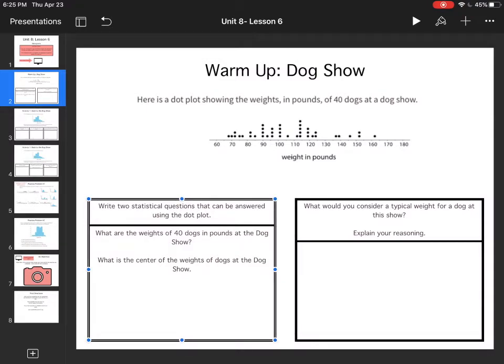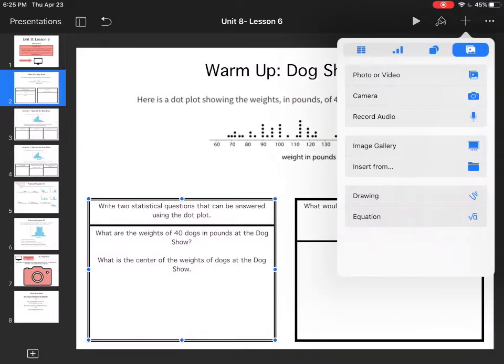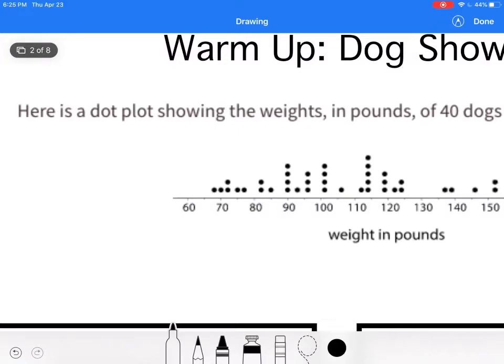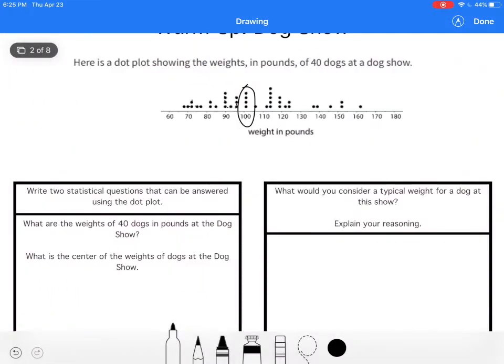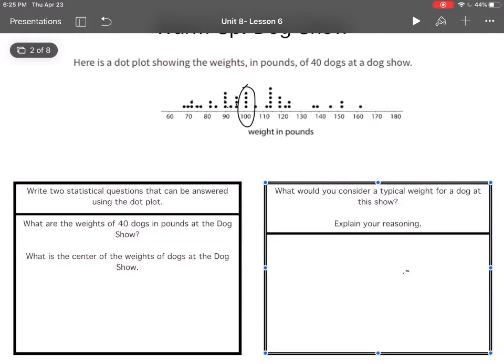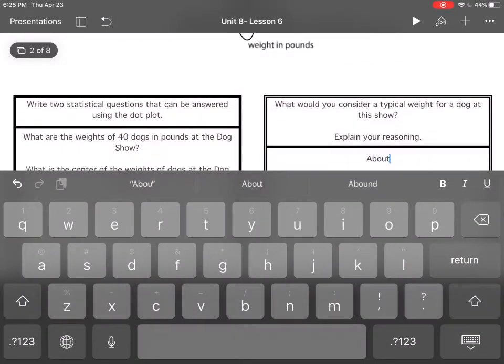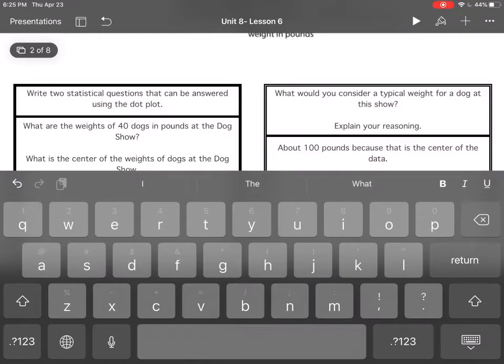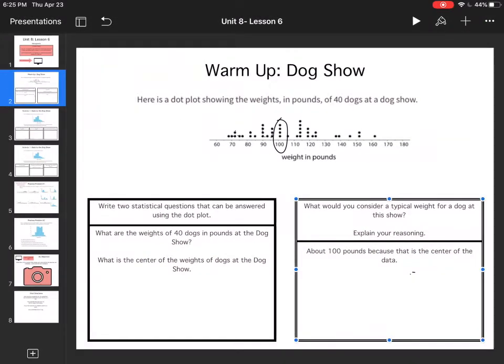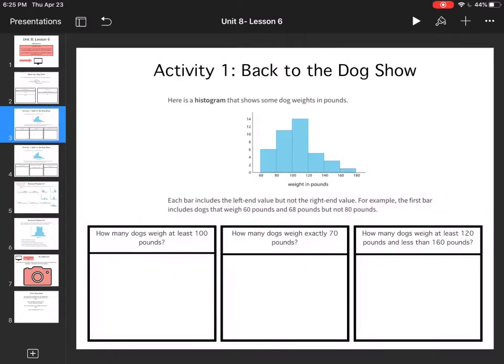What would you consider a typical weight for a dog at this show? Explain your reasoning. I know that there are 40 of these dogs, so I'm going to count till I get to 20 dots. So I'm going to guess around 100 pounds. The typical dog weight is about 100 pounds. That's the midway point - 20 dots before and 20 dots after.